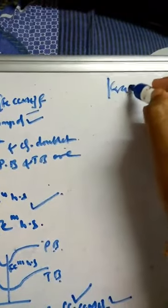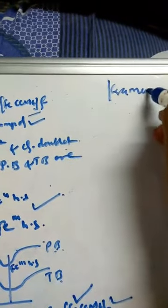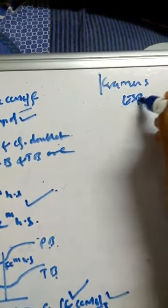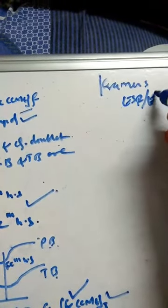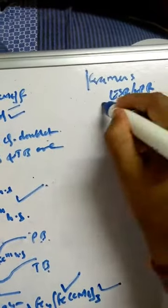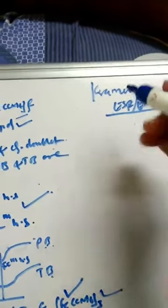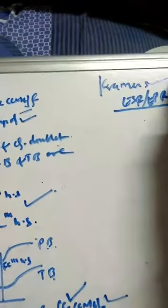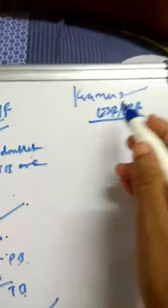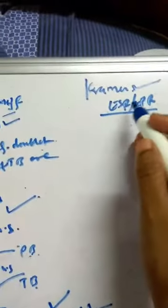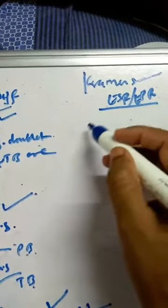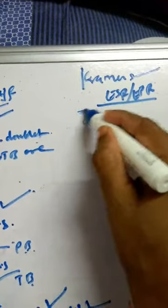The next topic is Kramers' rule of degeneracy in ESR/EPR, which was left from a previous session. What is Kramers' rule? Kramers' rule is also called zero field splitting. It is observed when there is more than one unpaired electron.